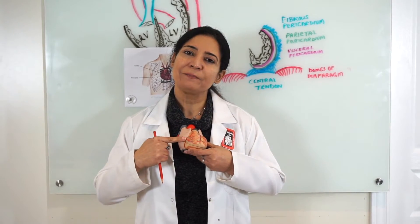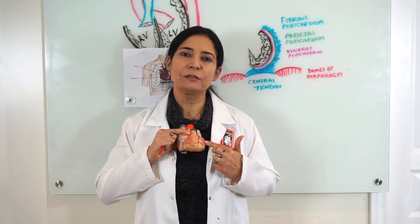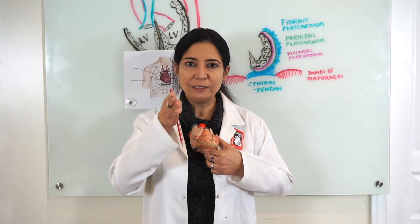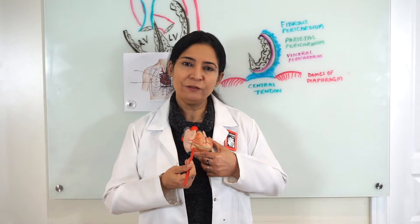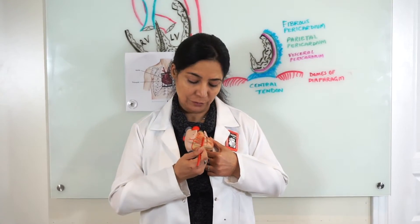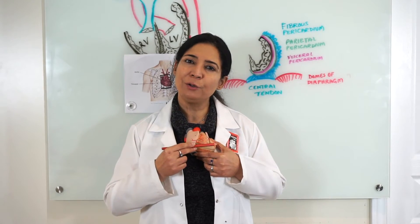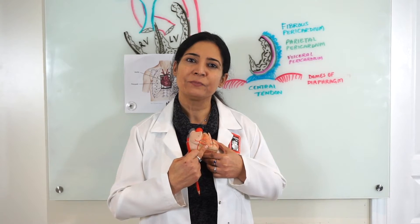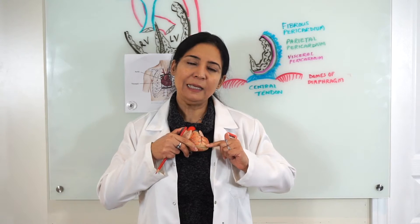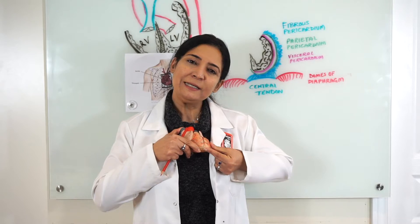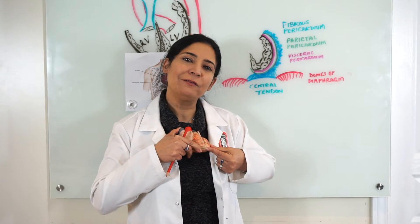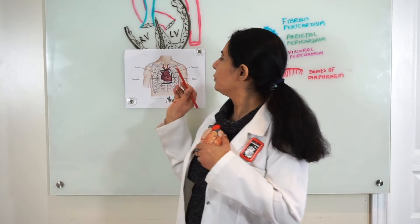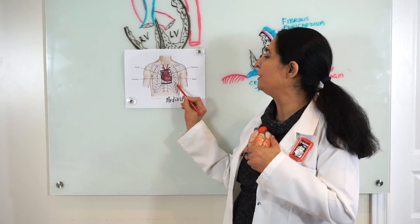The anterior surface or sternocostal surface has the two ventricles. The anterior interventricular groove defines the two ventricles. The ventricle on the right side of the interventricular groove is the right ventricle. Two-thirds of the sternocostal surface has been formed by the right auricle and the right ventricle. One-third has been formed by the left ventricle and the pointed apex of the heart, which is pointing towards the fifth intercostal space.